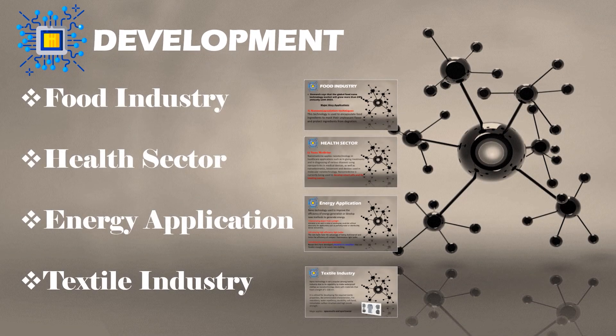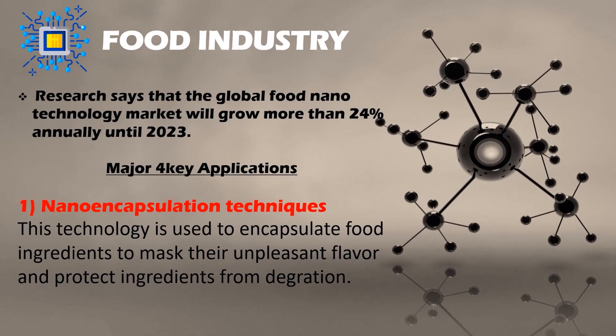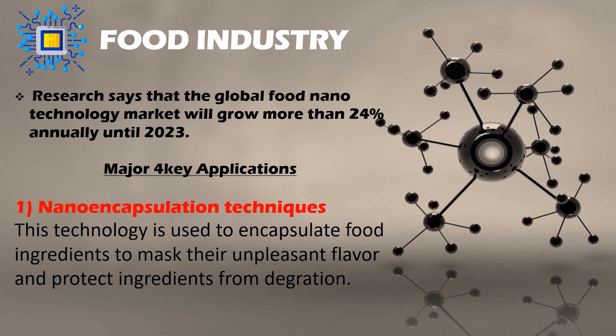Development of nanotechnology in the food industry. There are four major key applications in the food industry with the expansion of nanotechnology. Number one: nano encapsulation technique. This technology is used to encapsulate food ingredients to mask their unpleasant flavor and protect ingredients from degradation.